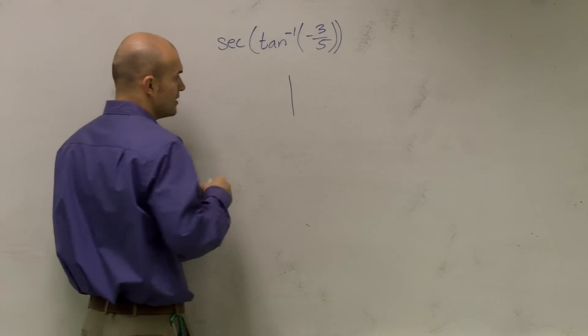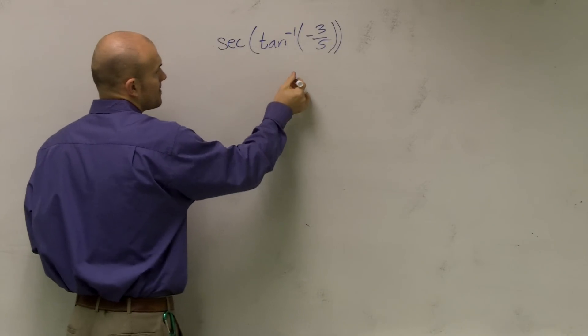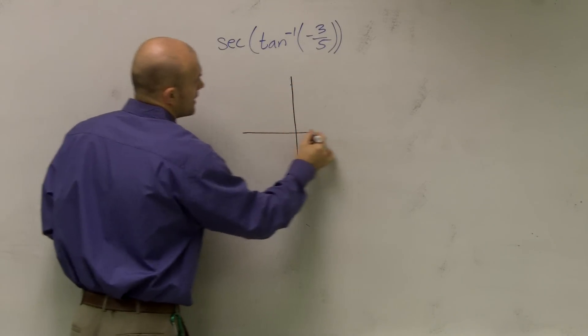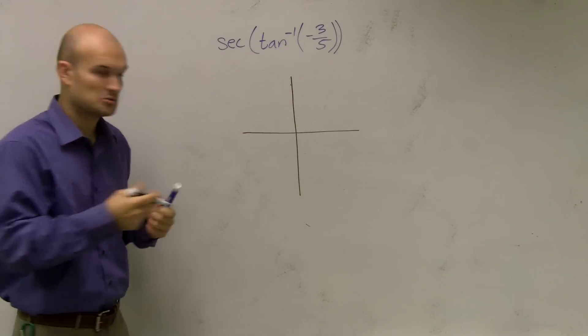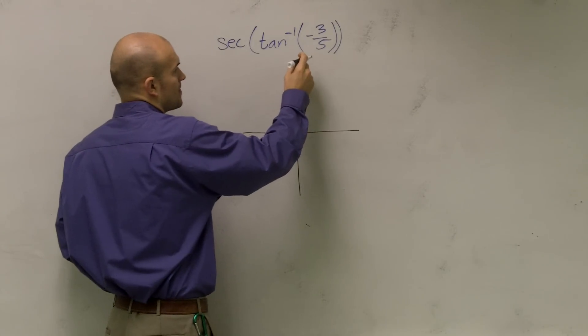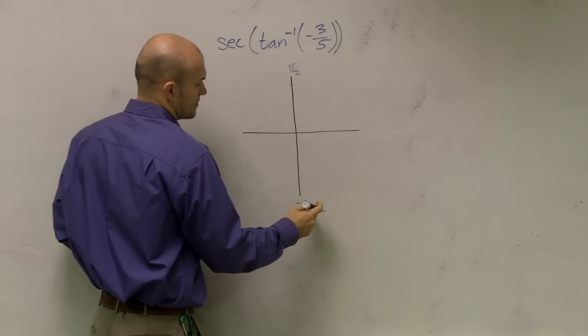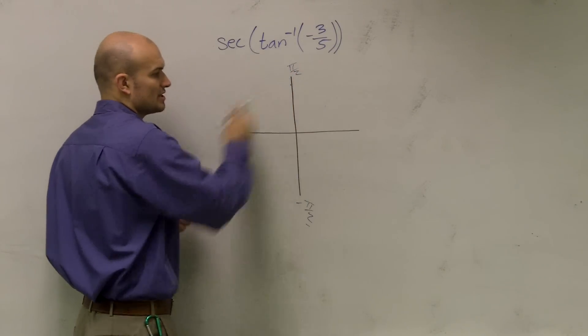So what I'm going to do is I'm going to draw our quadrants here. And now remember, guys, tangent is only going to be between negative pi over two and pi over two. So we're only going to be dealing with this right side.